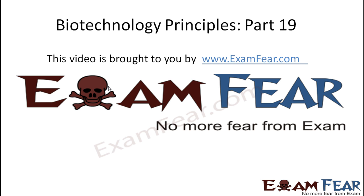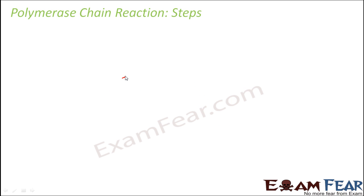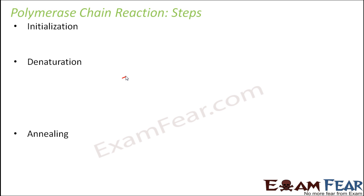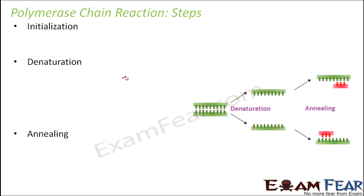Hello friends, this video on biotechnology principles part 19 is brought to you by examfear.com — no more fear from exam. So now let us look at the polymerase chain reaction step by step. The main steps involved in PCR are: initialization, followed by denaturation, and then followed by annealing. Let us start with initialization.